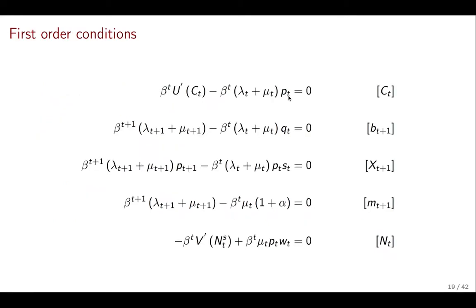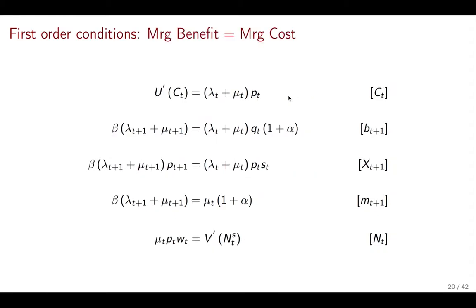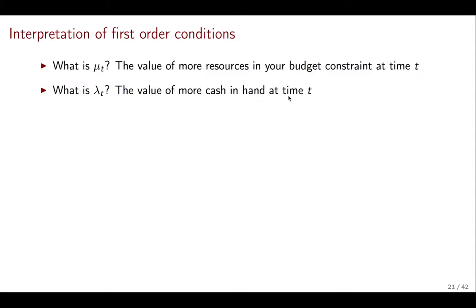And here you can see the first order conditions. I'm not going to stop here too long because I actually want to show you the next slide where I have those same conditions. I'm just writing all of them as marginal benefit in the left hand side equals marginal cost in the right hand side. And one thing you should do is take each of these equations and interpret what they mean. I'm going to give you some pointers for that.